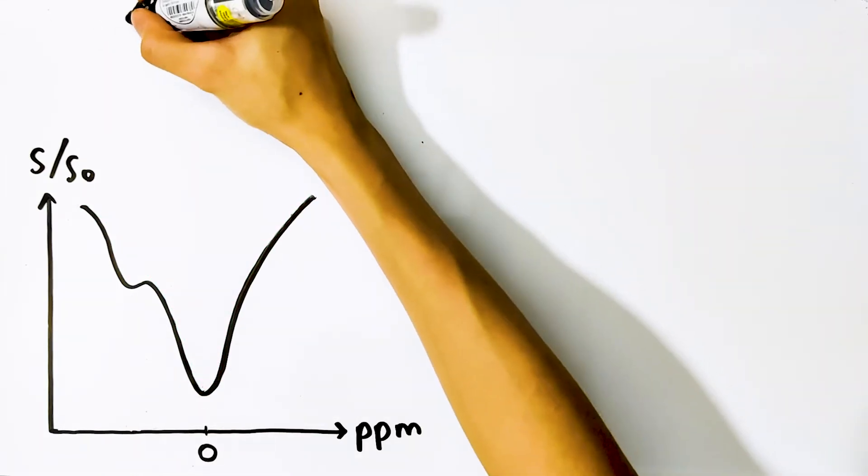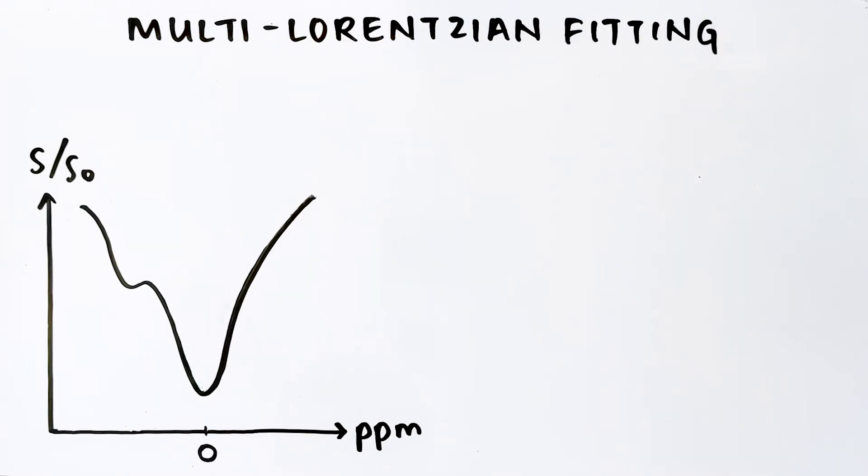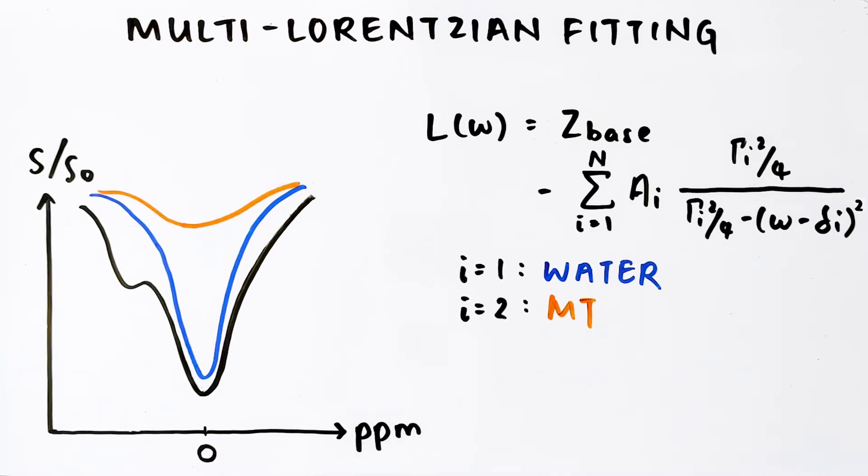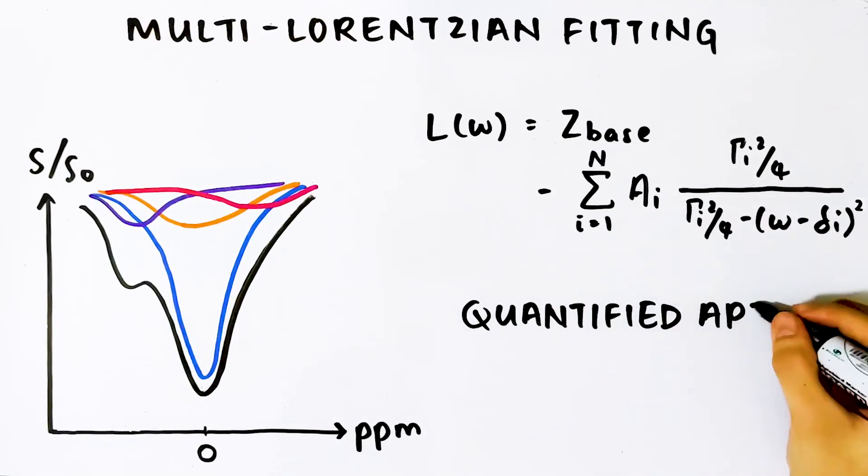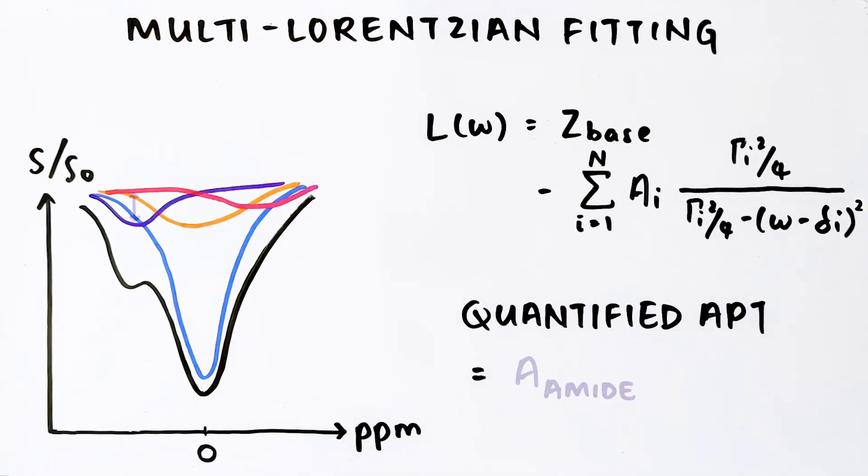Similar to LDA, multi-Lorentzian fitting is a quantification method that also utilizes the Lorentzian line-shape model, but instead, all of the visible CEST contributions in the Z-spectrum are modeled. Then, the quantified APT effect is simply equal to the fitted amplitude of the amide pool.